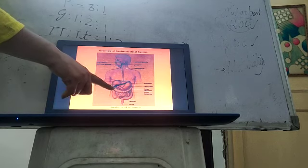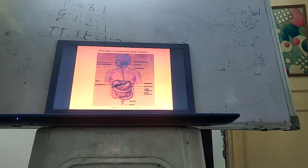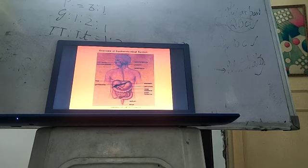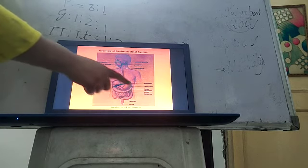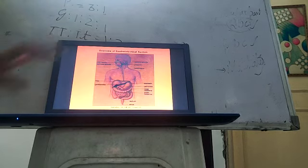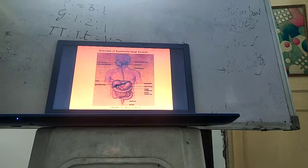Then here is J-shaped stomach where digestion takes place. Then this coiled structure is known as small intestine. After small intestine here is large intestine and at last it ends with the anus.